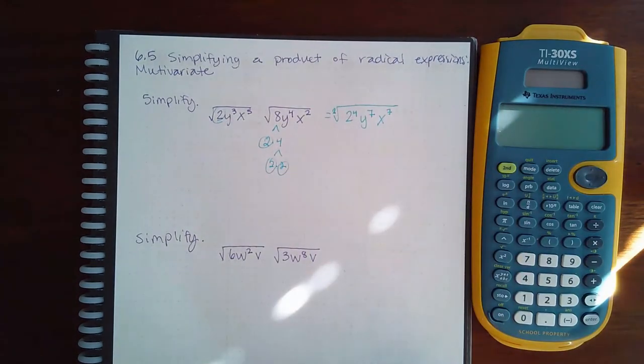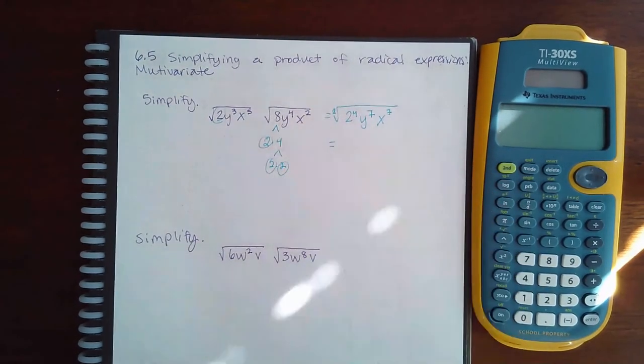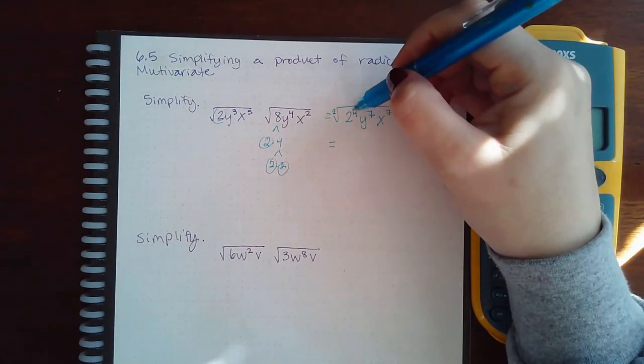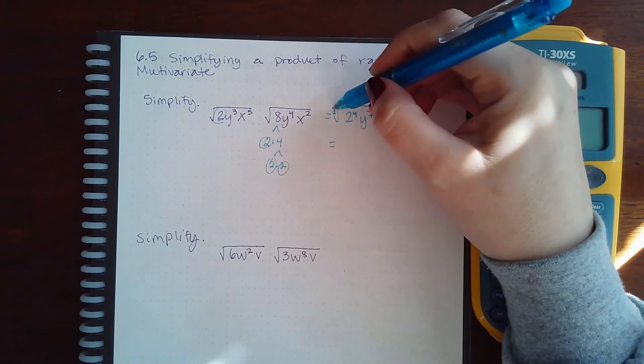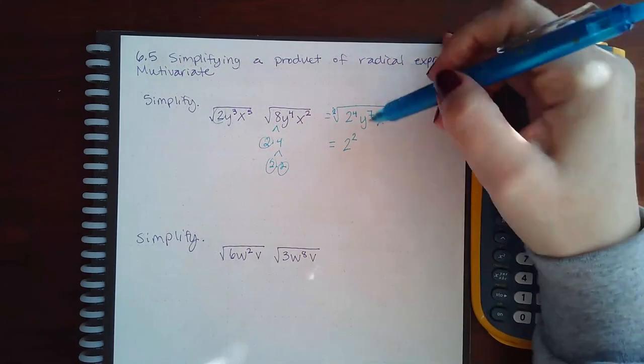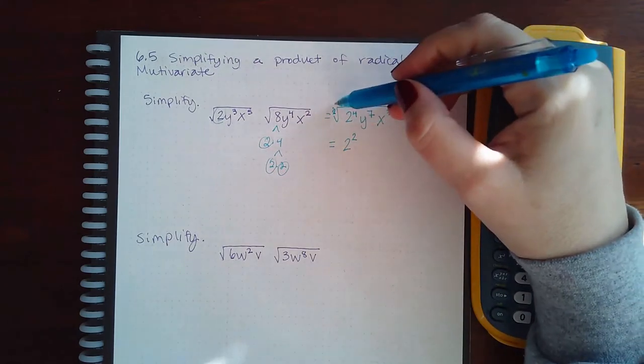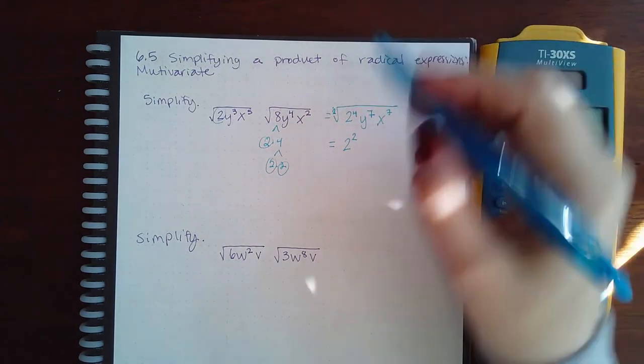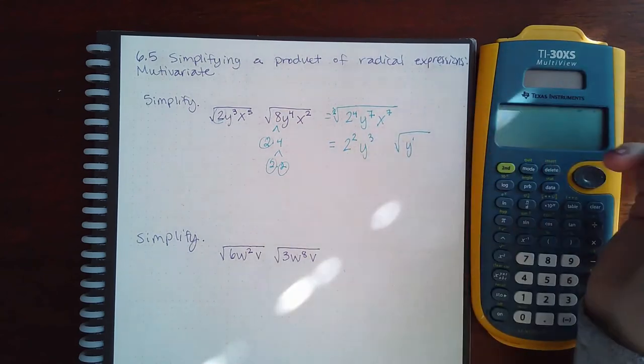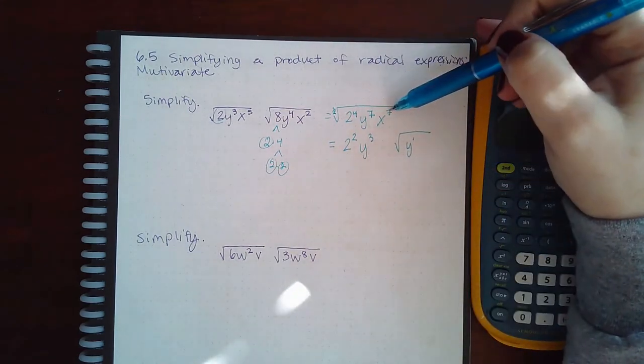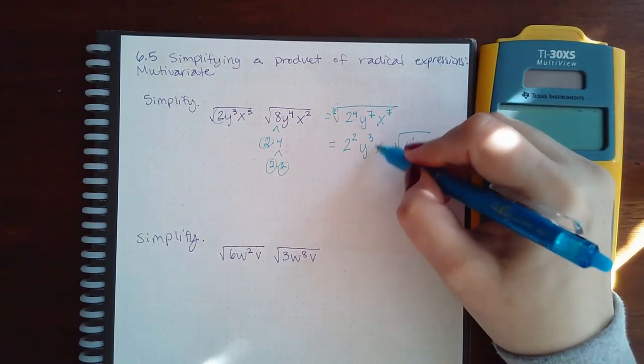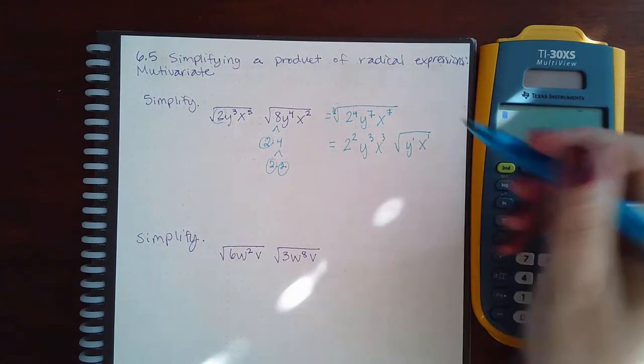Remember a square root has an index of 2, so if I mentally go to exponent form I'm going to have 2 to the power 4 over 2, and 4 divided by 2 goes in evenly 2 times. I'm going to have y to the 7 over 2, 7 divided by 2 is 3 with 1 left over. For x, 7 over 2, 7 divided by 2 is 3 with 1 left over.